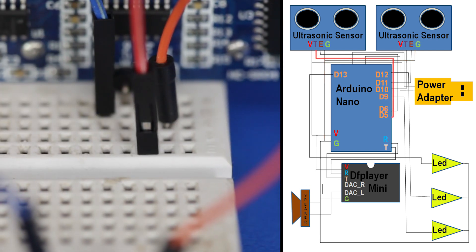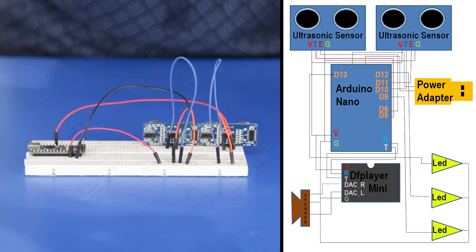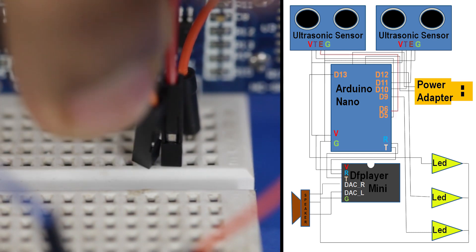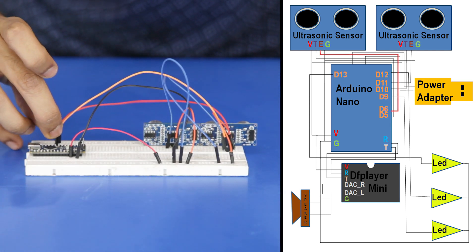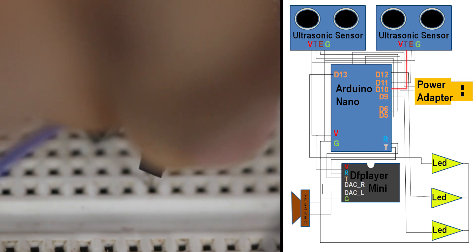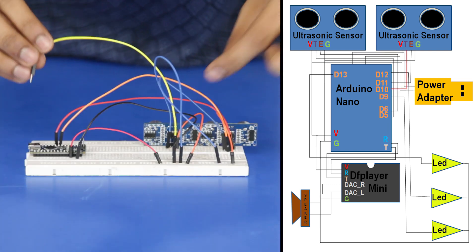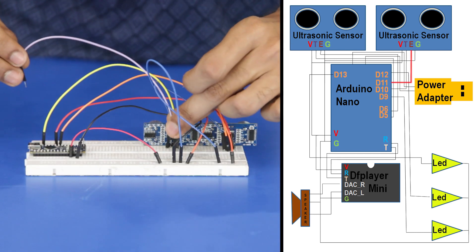The trigger pin of the sensor is connected to D5 pin of the Arduino and the echo pin to D6 of the Arduino. The second sensor trigger pin and echo pin is connected to D10 and D11 pin of the Arduino respectively.